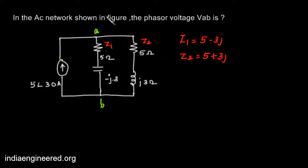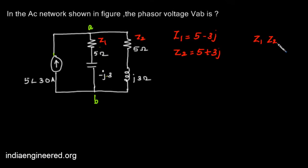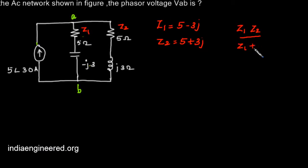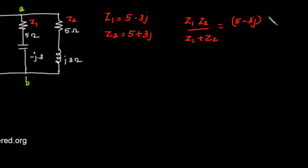Now how can we find out the equivalent impedance of Z1 and Z2 in parallel? That will be similar to resistances: Z1 Z2 by Z1 plus Z2. That will be (5-3J) into (5+3J) by (5-3J) plus (5+3J).